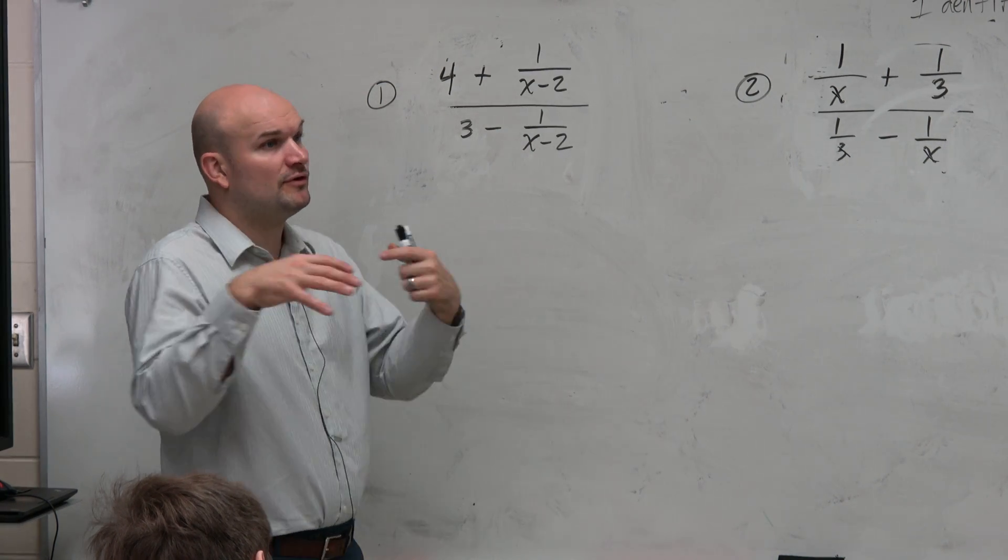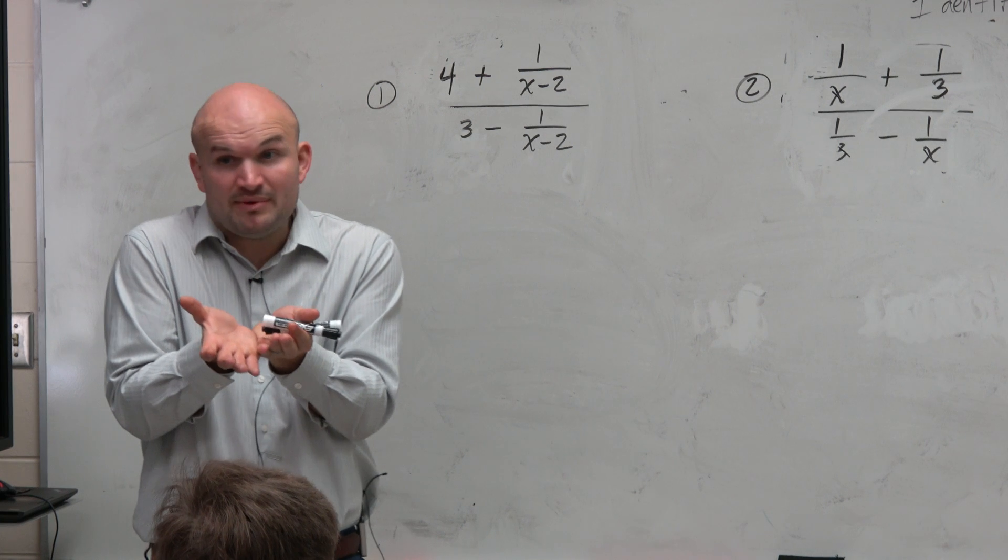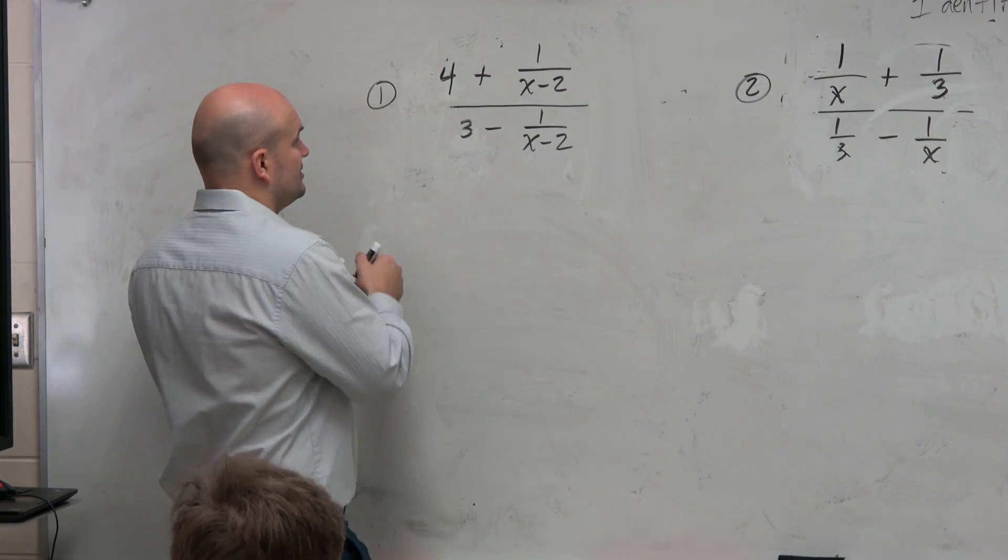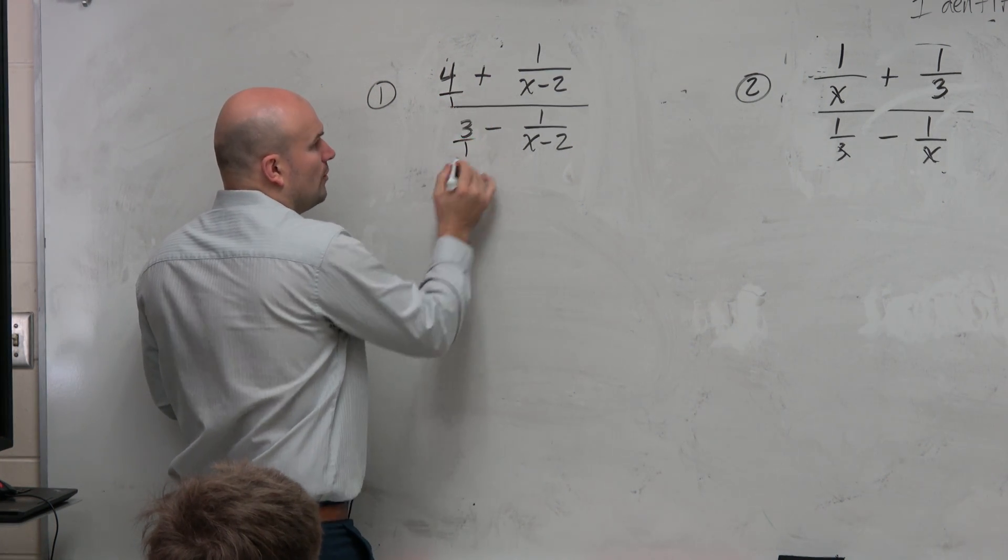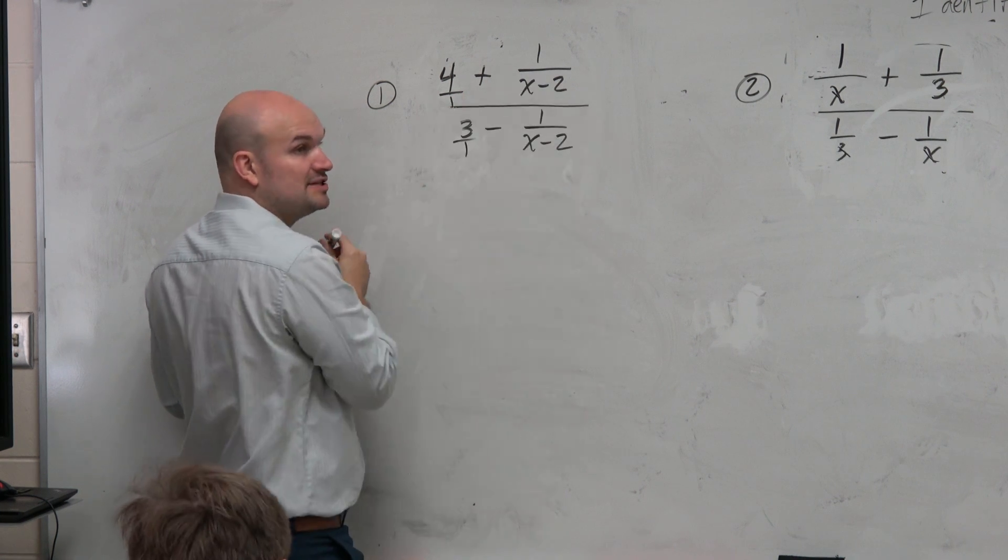If you guys remember for rational equations, what we did to eliminate the fraction was multiply by the LCD. You could put these numbers here over 1, and you can recognize that the LCD is just x minus 2.